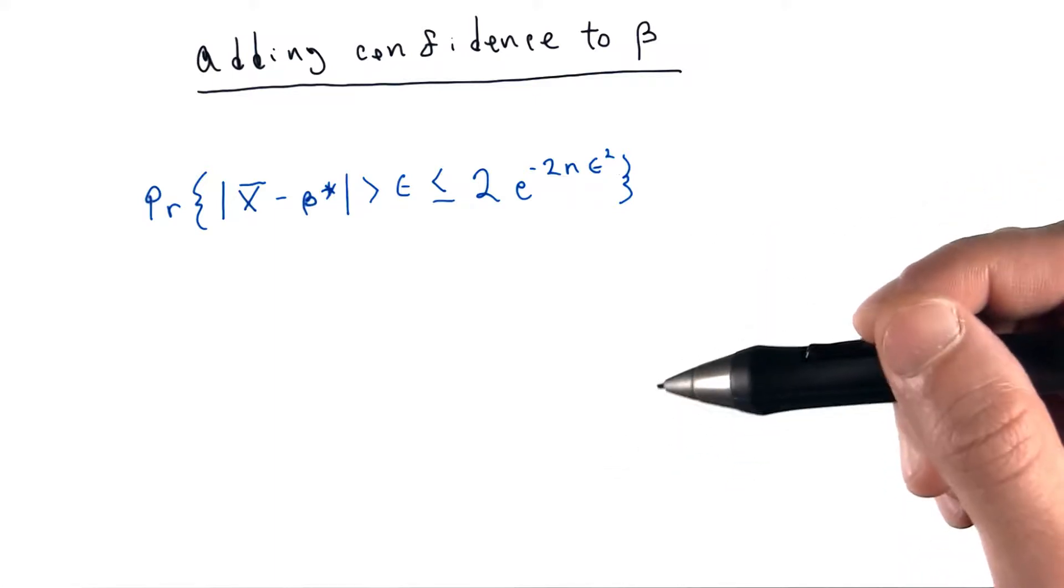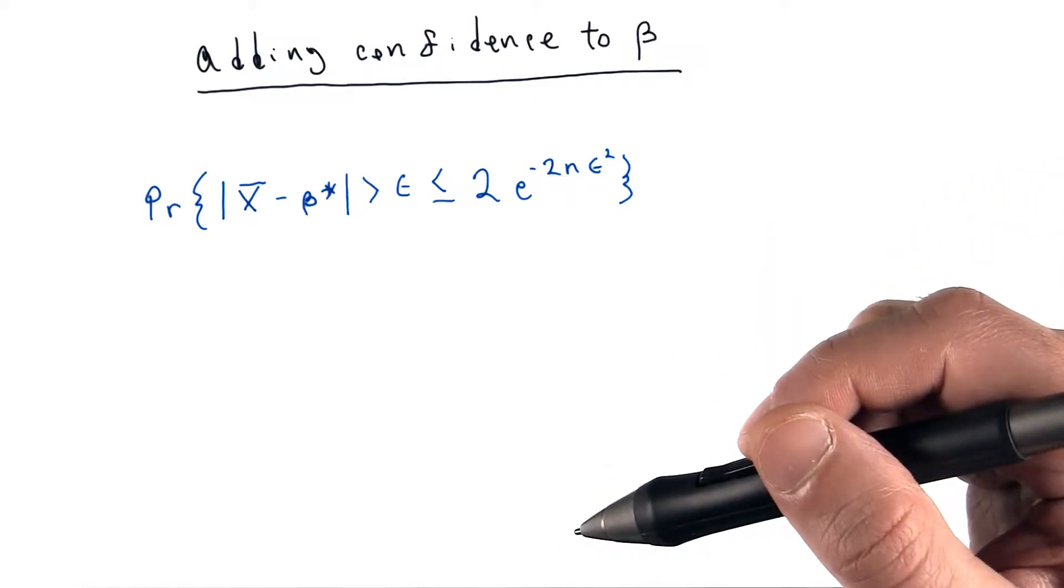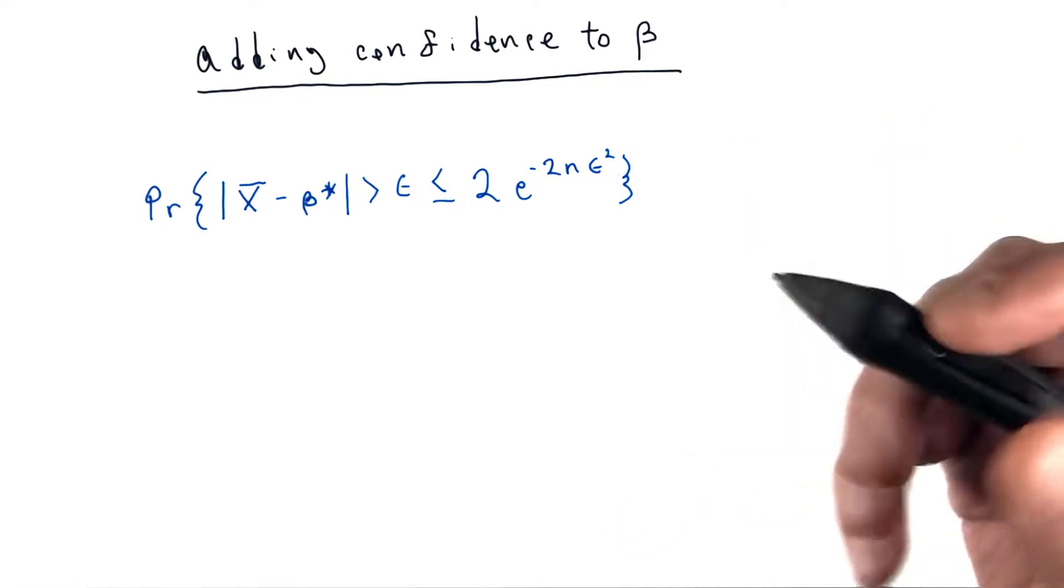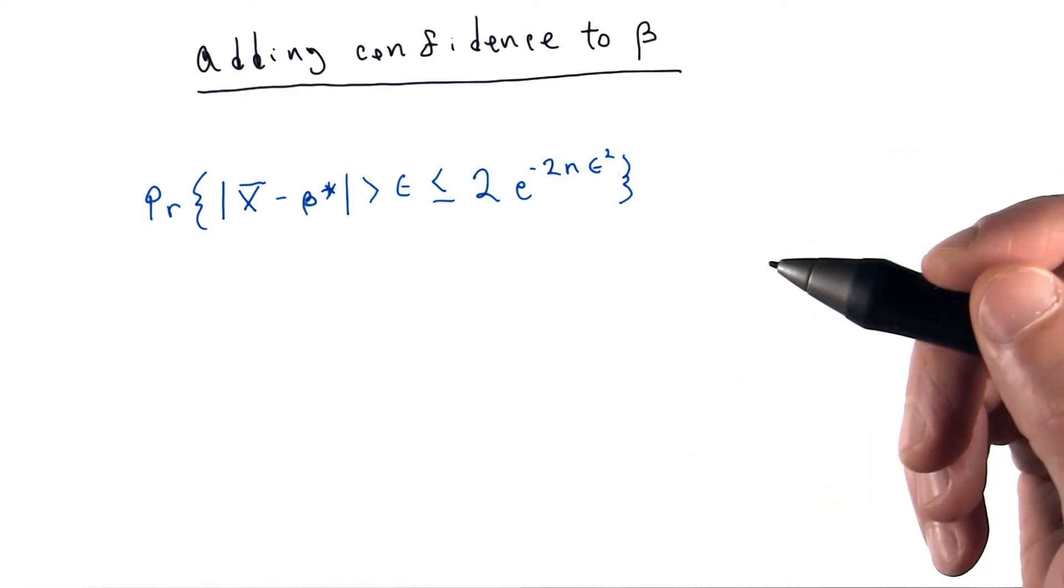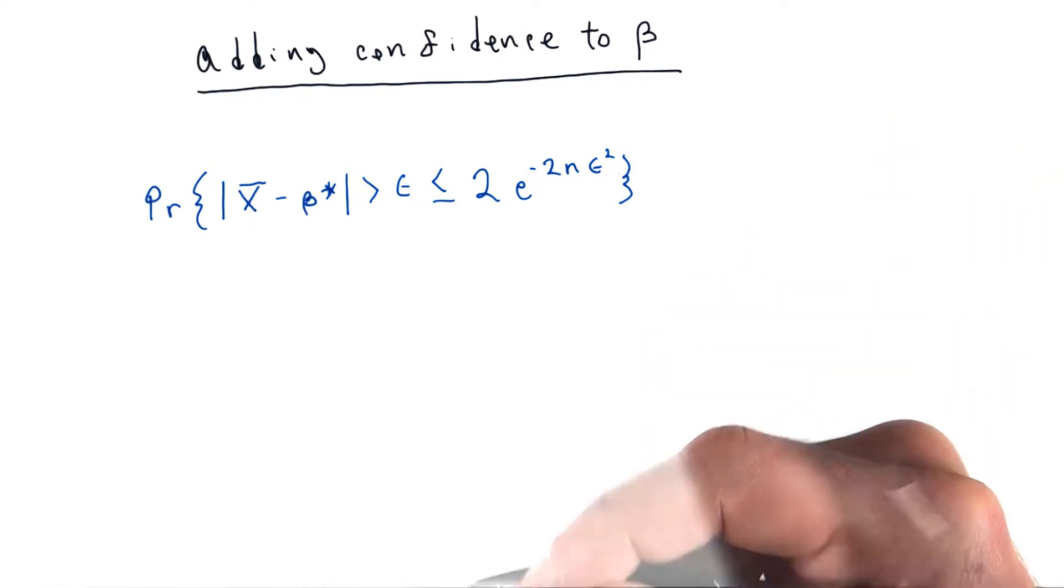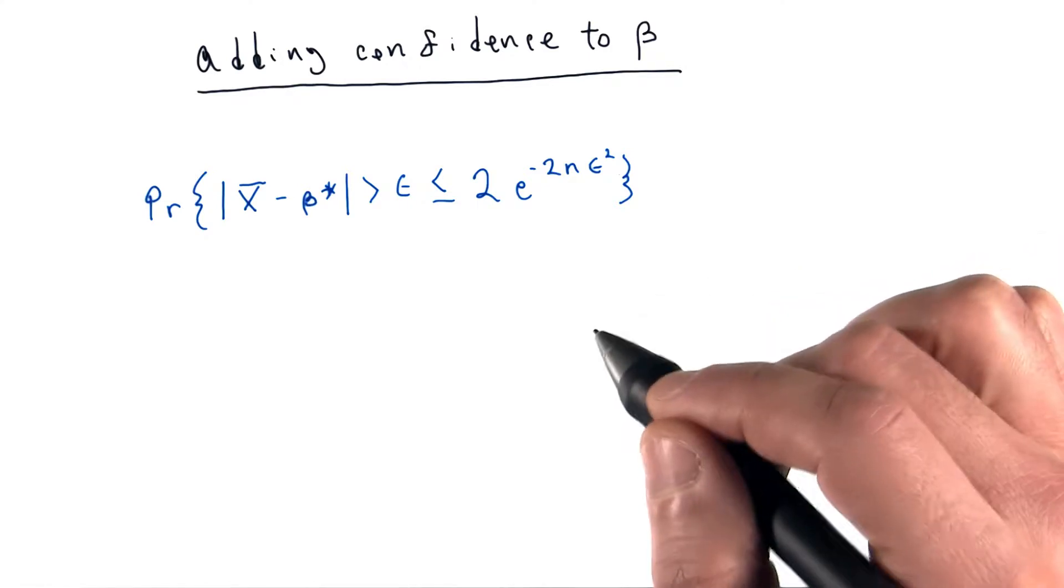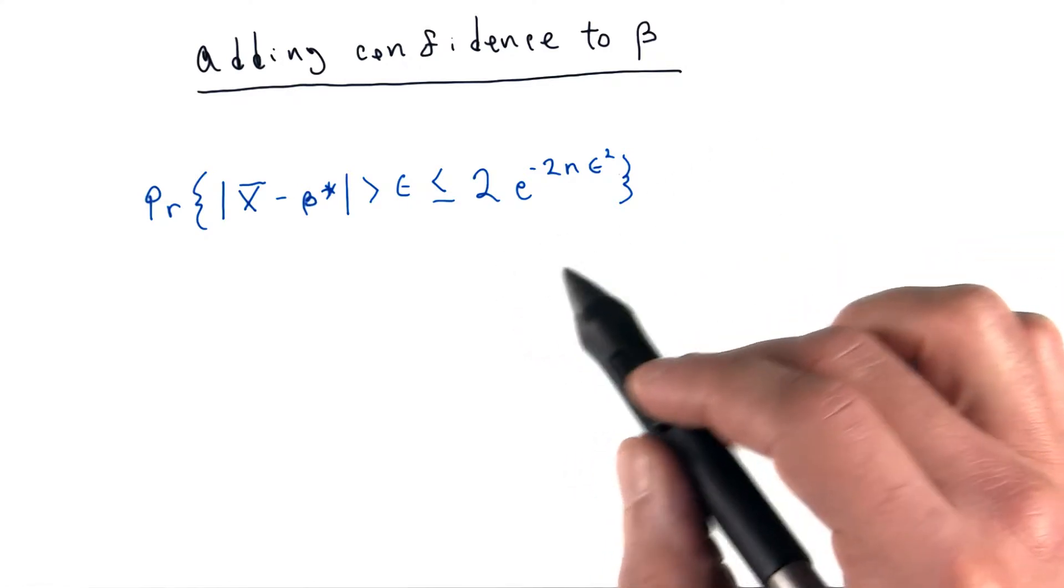In the previous video, we introduced Hoeffding's inequality, which puts a probability bound on the amount by which our estimate of beta will deviate from the actual value. We saw that this bound is actually a function of the number of data points that we have.